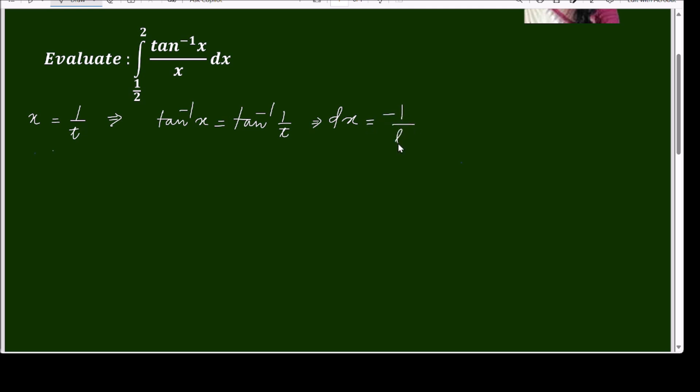minus 1 over t squared dt. Coming to limits: when x lower limit is half, t equals to 2, and when x equals to 2, t equals to half, because t is 1 by x, so the limit will be changed or reversed.